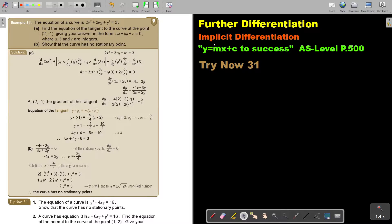In this video, we will continue with implicit differentiation. You will find this on page 500 in the Namibia AS level mathematics textbook y equals mx plus c to success.